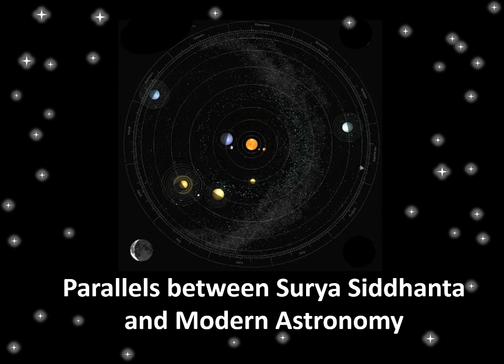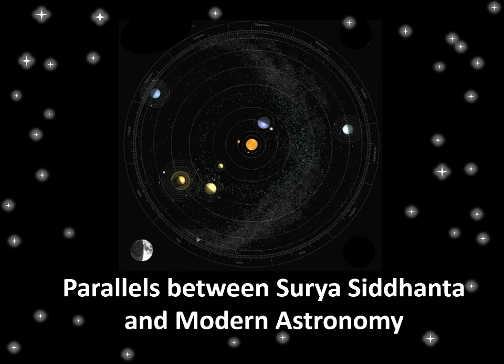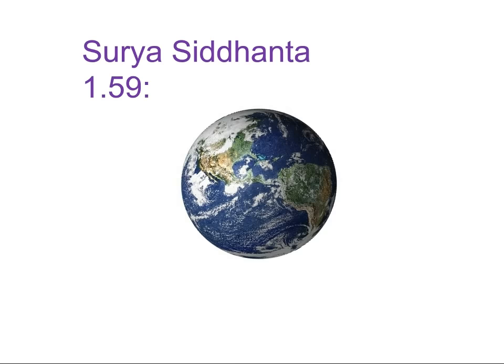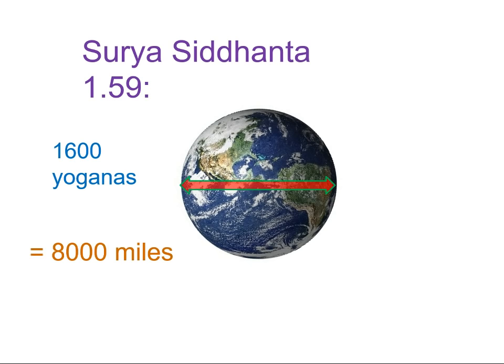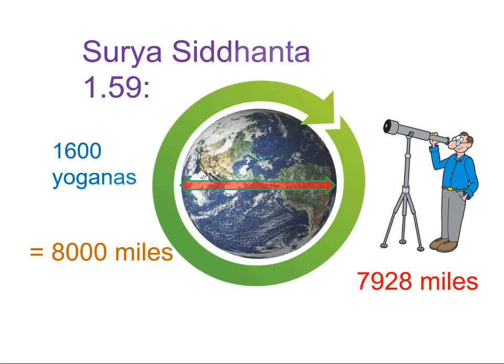Let's look at parallels between the Surya Siddhanta and modern astronomy. Surya Siddhanta 1.59 describes the diameter of the earth as 1,600 yojanas, which works out at about 8,000 miles. That's very close to the modern estimate of 7,928 miles — very close indeed. From that, of course, the Surya Siddhanta explains how you can find the circumference of the spherical Earth.